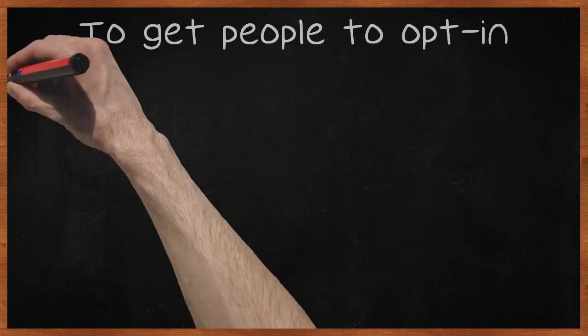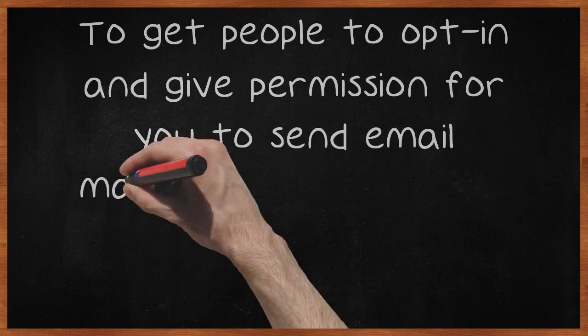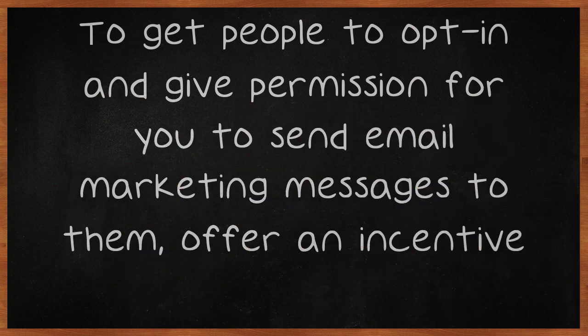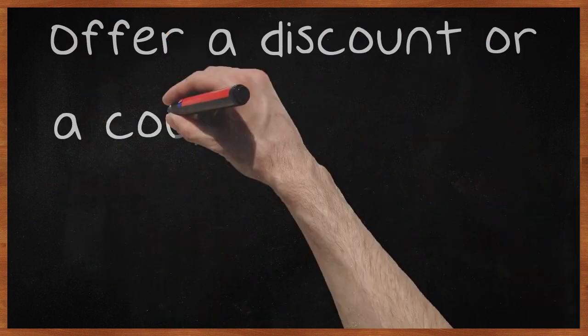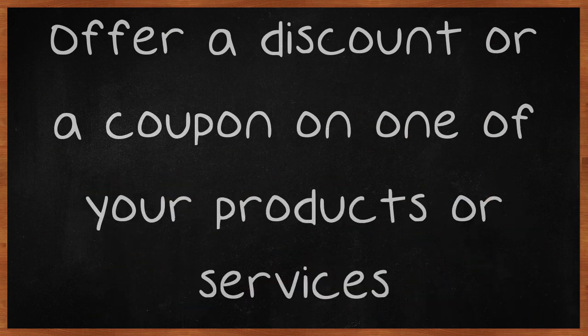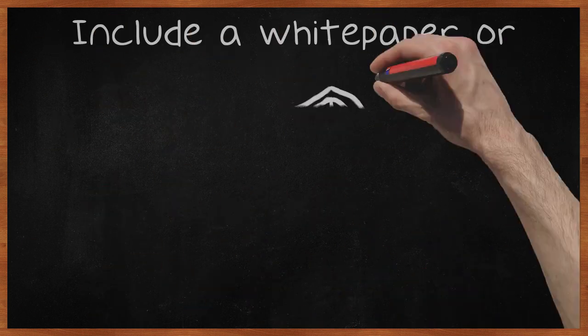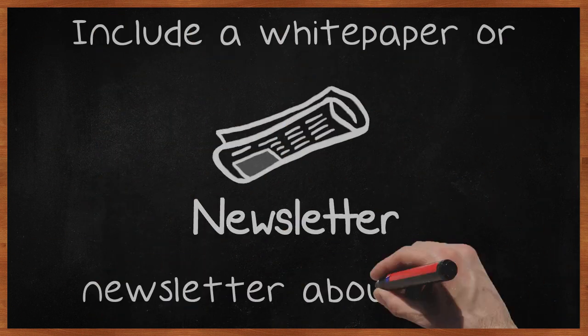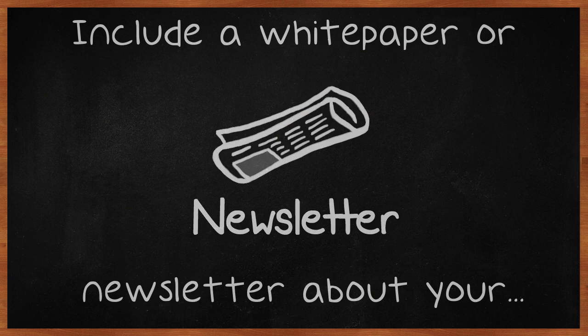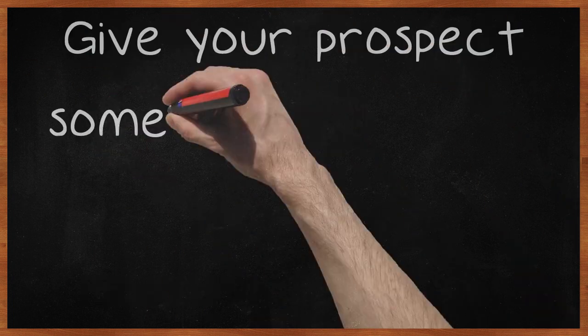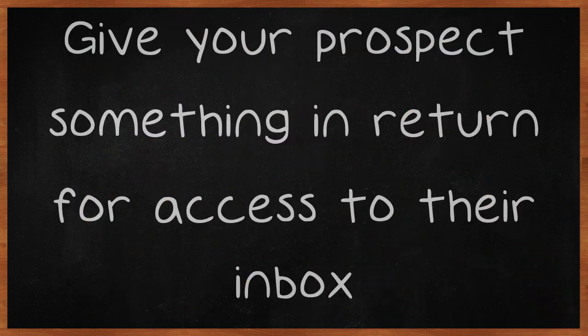To get people to opt-in and give permission for you to send email marketing messages to them, offer an incentive. Offer a discount or a coupon on one of your products or services. Include a white paper or newsletter about your niche or market. Give your prospect something in return for access to their inbox.